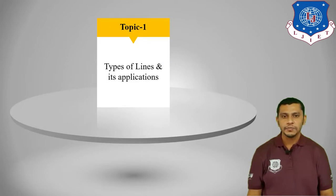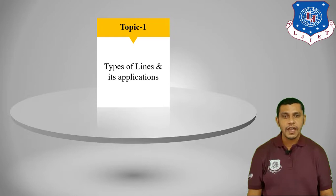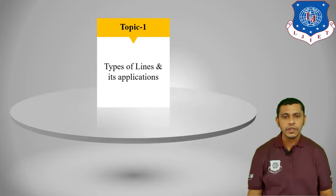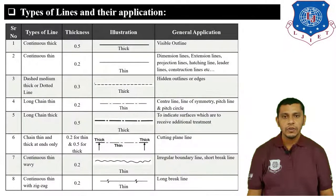Now, what is the importance of lines? Lines give specific information to designers and manufacturers regarding the design and manufacturing of the product. If a technical person doesn't have knowledge of lines, it is not possible for them to read drawings and execute work based on those drawings. In engineering drawing, lines are used as the medium of communication, so every technical person must have knowledge of lines. This table gives us information regarding the type of line with its thickness, illustration, and general applications.